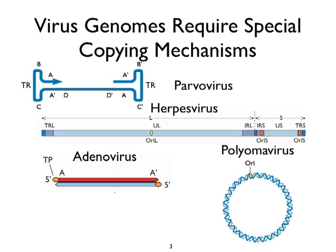Polyomaviruses are circular supercoiled molecules — two strands of DNA interwoven and locked together to form a circle. As a result, torsional energies cause the molecule to twist. The last virus genome I'll discuss is adenovirus, where the virus uses a protein molecule called terminal protein to initiate DNA replication.